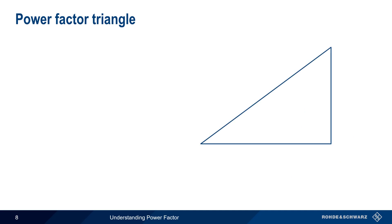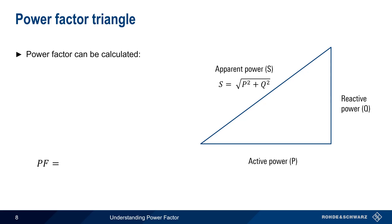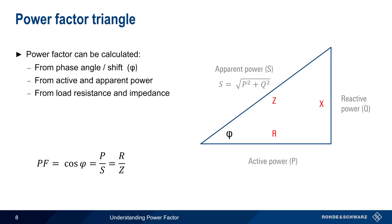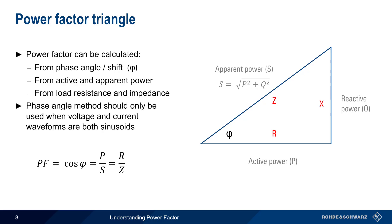Now let's come back to the power triangle, which represents active, reactive, and apparent power as vector quantities. For linear loads, power factor can be calculated by taking the cosine of the phase shift phi between the voltage and current waveforms. Power factor also can be calculated using the ratio of active to apparent power. If we view this triangle as representing complex impedances, then power factor is the ratio of the load resistance R to the complex load impedance Z. It's important to remember that power factor should only be calculated from phase shift phi when the voltage and current waveforms are both purely sinusoidal.